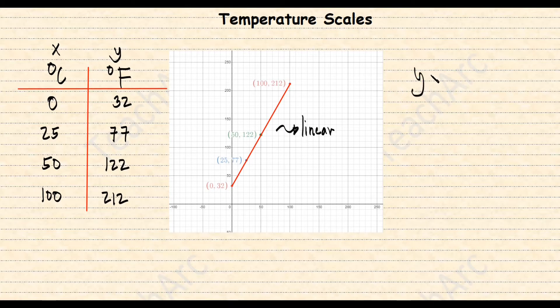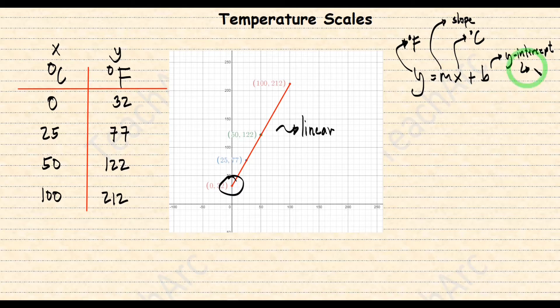And so, the forever famous Y is equal to MX plus B, the linear equation can be applied. Y represents degrees Fahrenheit, X is degrees Celsius, M is the slope of the graph, and B is the Y-intercept or the value of Y when X is 0. In our graph, it's 32.